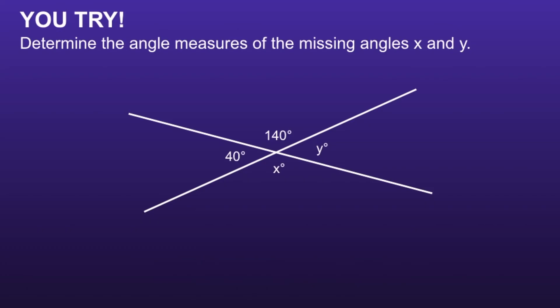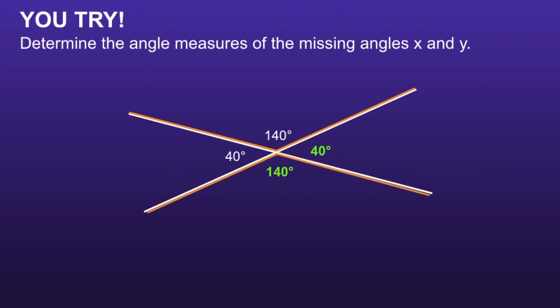The bottom angle, which was angle x, is going to be equal to 140 degrees. And angle y, or the angle on the right, is equal to 40 degrees. We know these are the angle measures because these are vertical angles. Notice the 40 degrees is opposite of the 40 degrees, and the 140 degrees is opposite of the 140 degrees. This is one example of how we can find missing angles using vertical angles.